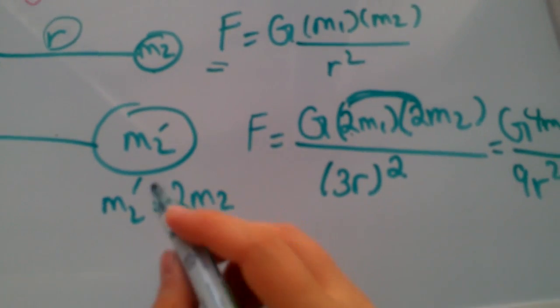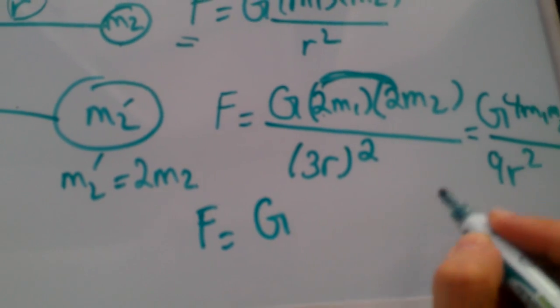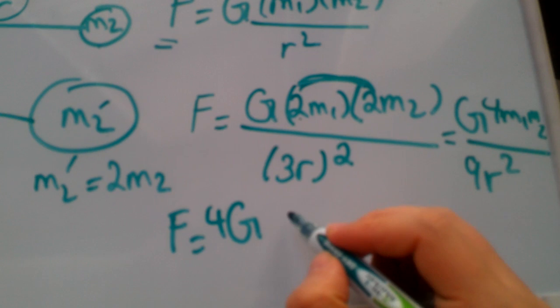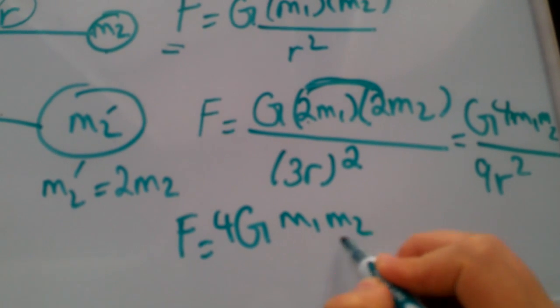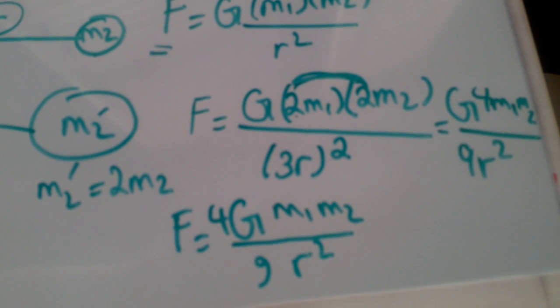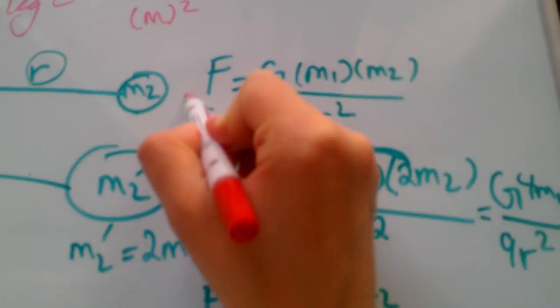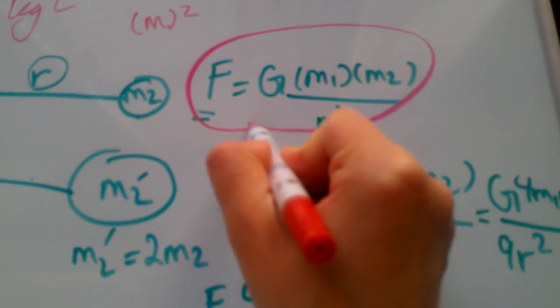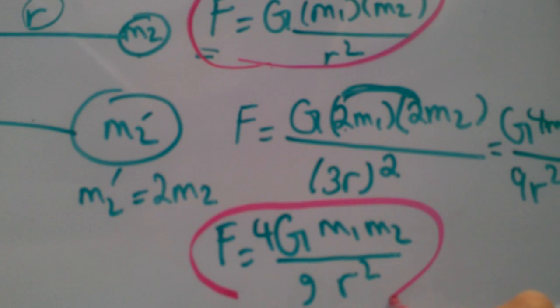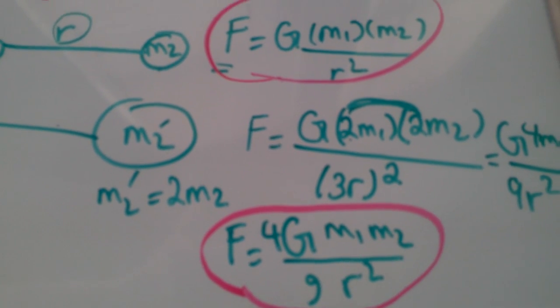Let me just rewrite this once again, so my F in the second case would be 4G m1 m2 over 9r squared. The first gravitational force was this, now the second case where I double the masses and triple the distance turned out to be this much.